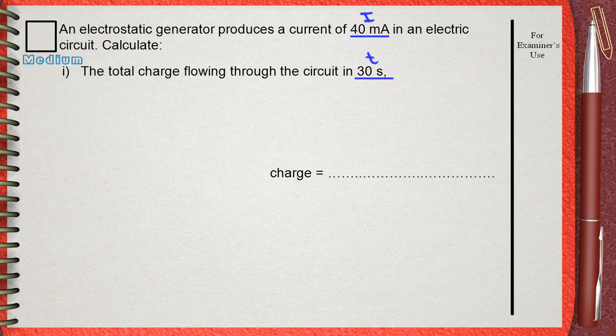The second given is time. It's 30 seconds. And you can know its time, as long as you see the number followed by seconds as the unit. This question requests the charge. It's important to know the letter that is used as a symbol for any quantity. The symbol of the charge is Q.